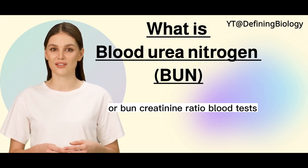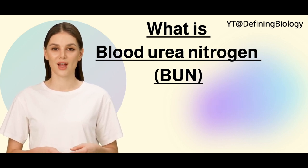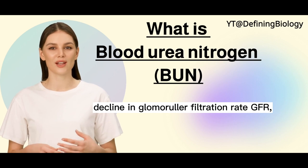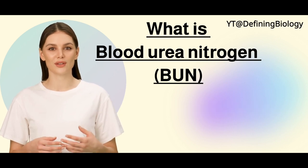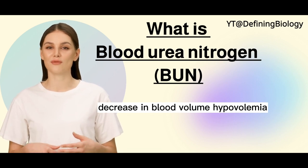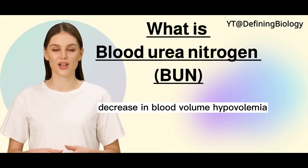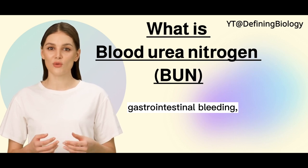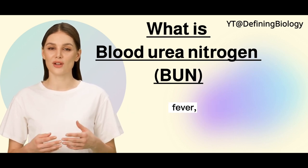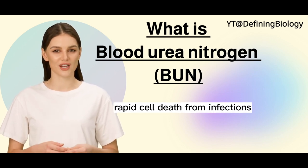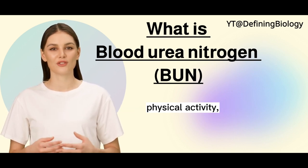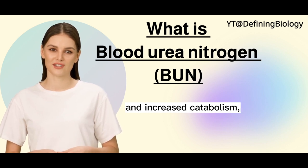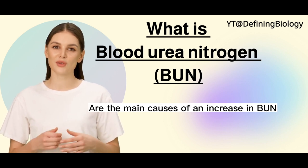High protein diet, decline in glomerular filtration rate (GFR), decrease in blood volume (hypovolemia), congestive heart failure, gastrointestinal bleeding, fever, rapid cell death from infections, physical activity, excessive muscle breakdown, and increased catabolism are the main causes of an increase in BUN.